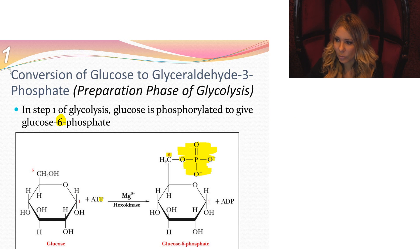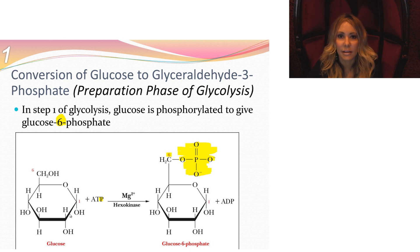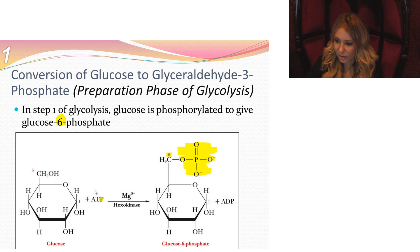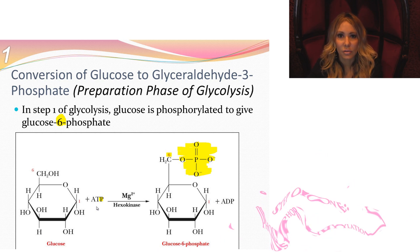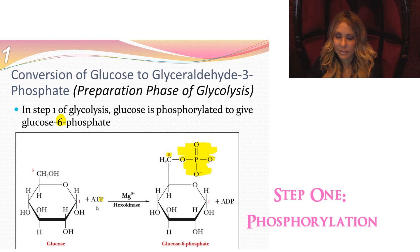Here we have step one. Our glucose has entered the cell and once it does, it gets a ball and chain put on it. This ball and chain is known as a phosphate ion. We're going to break it off of ATP, adenosine triphosphate. This is our energy currency for the cell. By doing so, this is a phosphorylation reaction. We stick it on the sixth carbon.